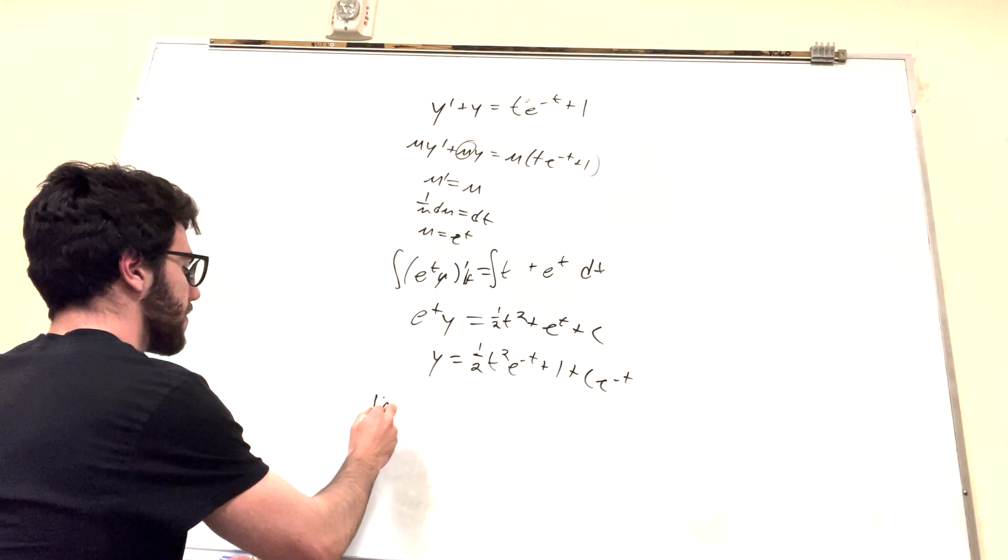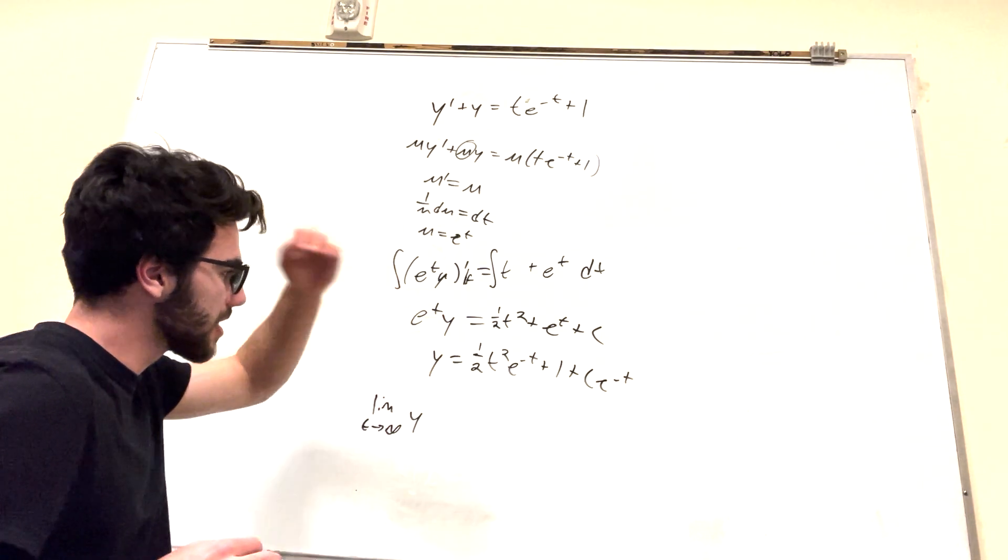And it's asking, what happens? This is t approaches infinity of y. Okay, so let's look at this. Let's look at each part and break it down.